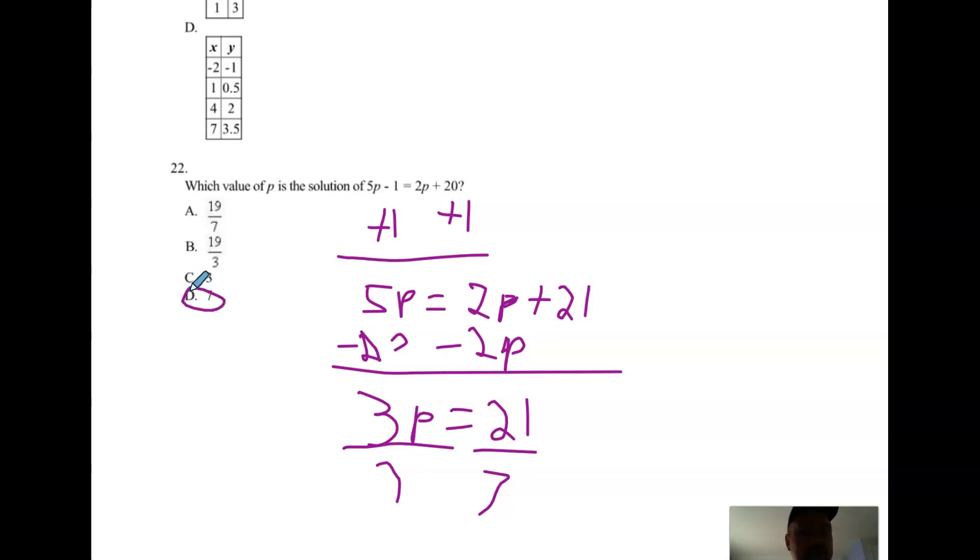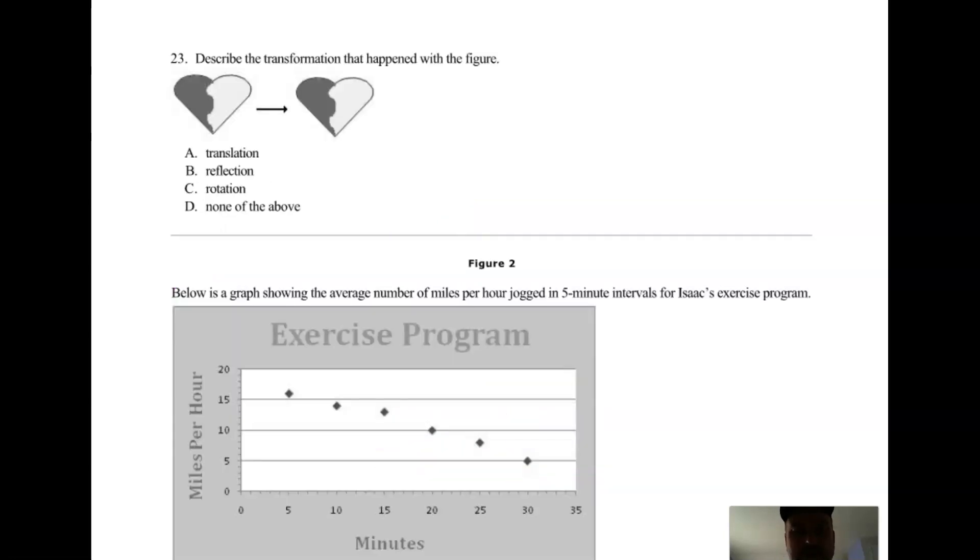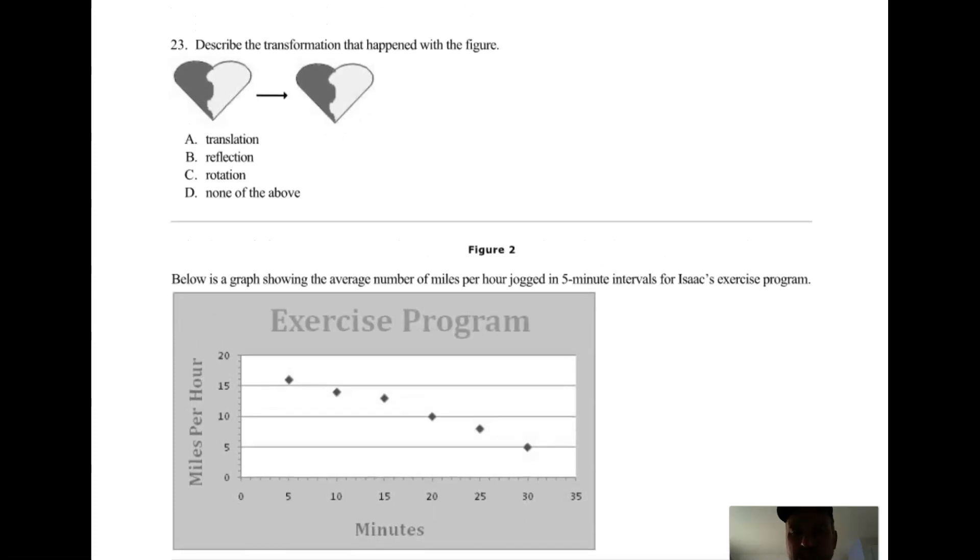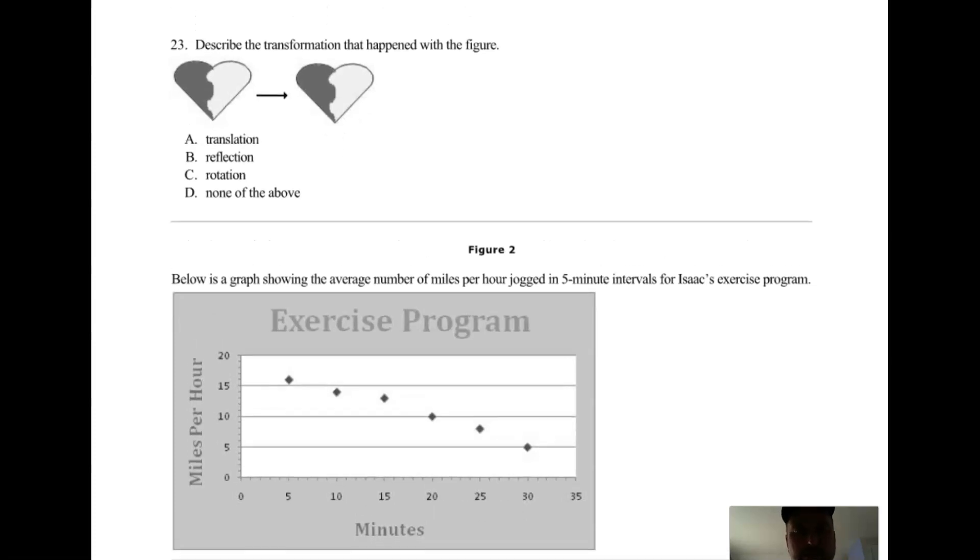Divide 3, divide 3. P equals 7. Next, 23: hopefully you recognize that's obviously a translation or slide. That's a pretty easy one, so that's a translation.